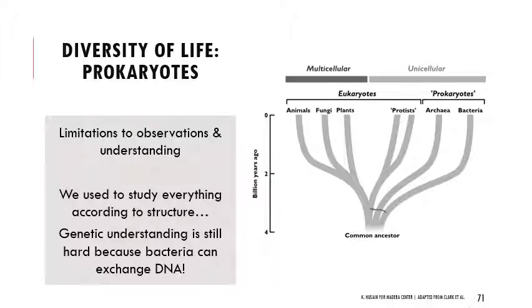Eukaryotes have organelles that help us deal with this size limit, so their cells can get bigger because they have supportive structures inside. Prokaryotes don't have those, so they have to remain small. Focusing first on prokaryotes, we have long grouped archaea and bacteria together because they share some structural components. But as we now have massive DNA databases, we're learning more and more about how different bacteria and archaea are from one another, and even how different bacteria are within their own group.